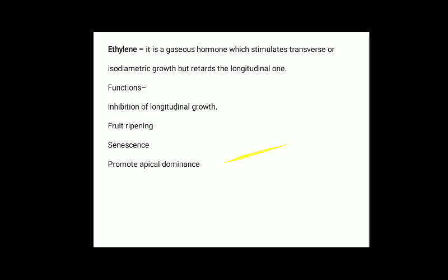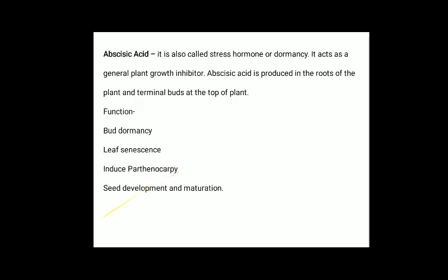Ethylene is a gaseous hormone which stimulates transverse or isodiametric growth but retards longitudinal growth. Its functions include inhibition of longitudinal growth, fruit ripening, senescence, and promoting apical dominance. Abscisic acid is also called the stress hormone or dormancy hormone. It acts as a general plant growth inhibitor. It is produced at the roots and terminal buds. Functions include bud dormancy, leaf senescence, inducing parthenocarpy, and seed development and maturation.